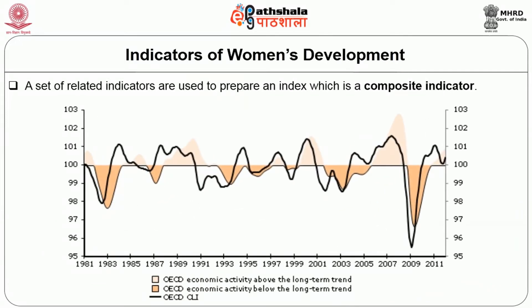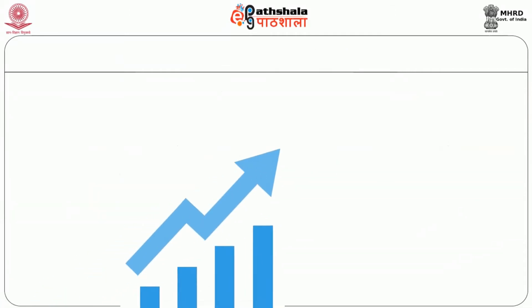A single indicator can provide a simple piece of information. In order to capture a holistic picture you need a set of related indicators, which are used to prepare an index — a composite indicator. In this exercise, weightage is provided to each indicator depending on its influence on the larger picture, based on sound statistical approaches. While composite indicators have the capacity to summarize multi-dimensional issues, they do have certain limitations which we need to understand.